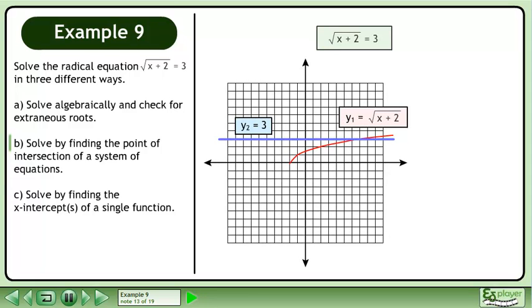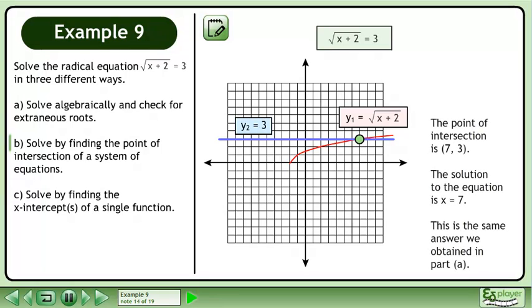Draw the graph of each function. The point of intersection is 7, 3. The solution to the equation is x equals 7. This is the same answer we obtained in Part A.